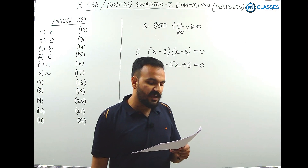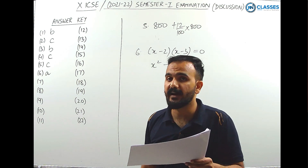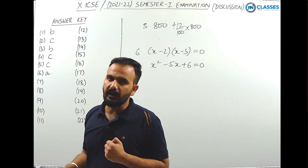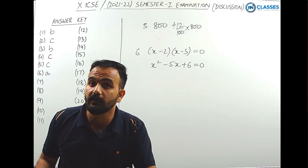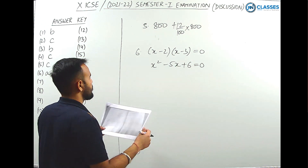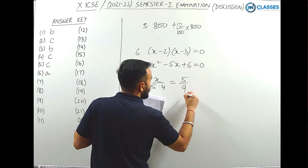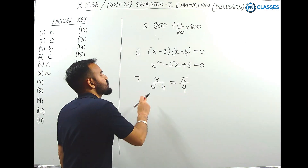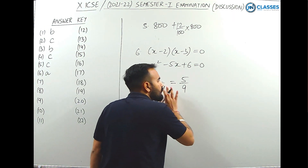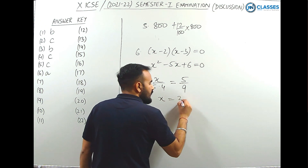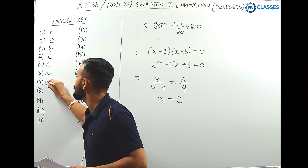Question 7: if x, 5.4, 5, and 9 are in proportion, find x. Since all four terms are in proportion, the ratio of the first two equals the ratio of the last two: x/5.4 = 5/9. Solving this equation gives x = 3. Option A is the right answer.